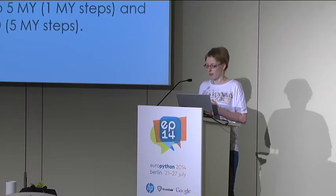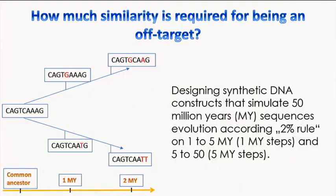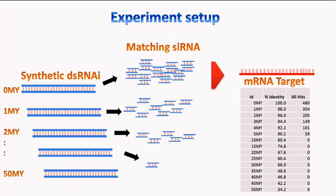The question is: how much similarity is required for being an off-target? We used a model called the molecular clock, which says that about every one million years in evolution, one nucleotide is changed. So if you have a common ancestor with a given sequence, after one million years you typically have one base pair exchange. We used this to design our experiments, constructing 15 synthetic constructs — which we know work, having worked on them for 10 years — with decreasing matching similarity.